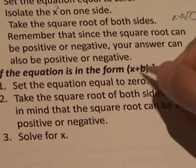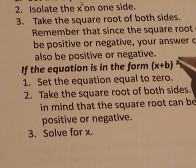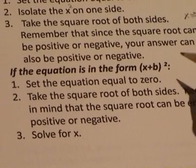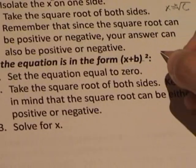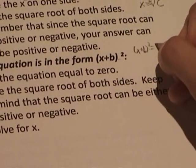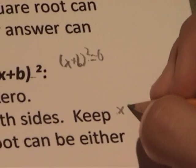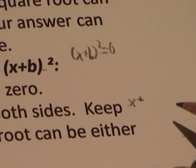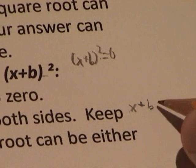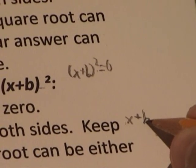However, if the equation is in this form, x plus b as a quantity squared, set the equation equal to 0. Then take the square root of both sides, keep in mind that the square root can be positive or negative.